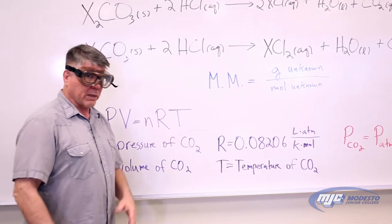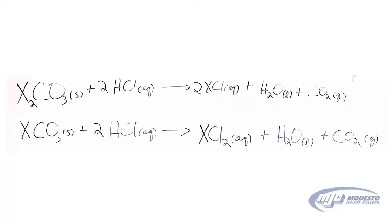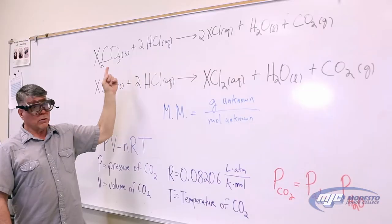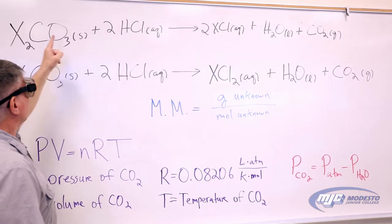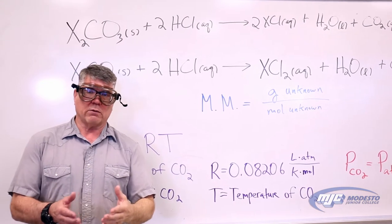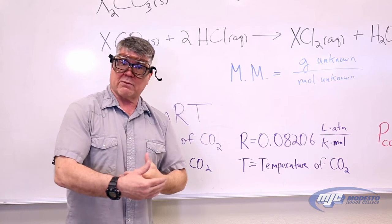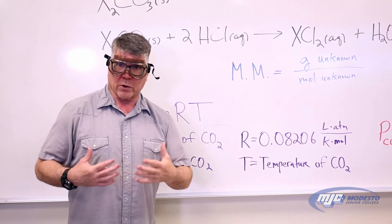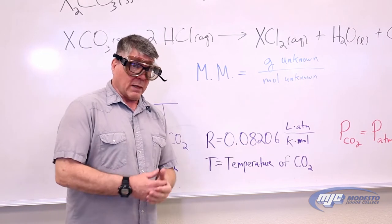Here's how you're going to do it, and here's where the ideal gas law comes into play. If you look at both of these equations, you see that one of the products in both cases is carbon dioxide gas. From the stoichiometry, the mole ratio, there's one mole of carbon dioxide produced for every one mole of your unknown, whichever form you have. Which means that if we can figure out how many moles of carbon dioxide are given off, that's the same as the moles of our unknown, which is the bottom part of this equation.